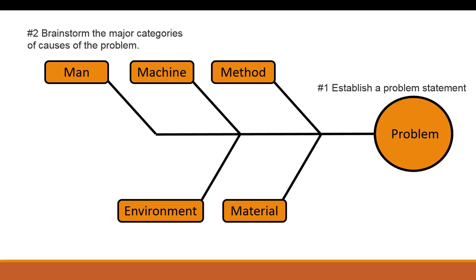In a very generic method, the categories are man, machine, method, environment, and material — very typical in manufacturing and production environments. Some groups might have different ones: an accounting organization may have money; a medical organization might have categories implying expiration dates or drugs. You don't necessarily have to limit yourself to these five — you can actually set up the categories based on what would logically fit your organization.